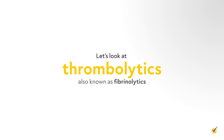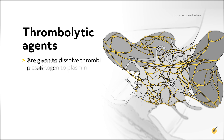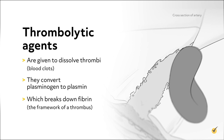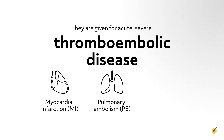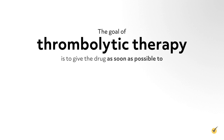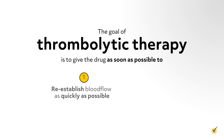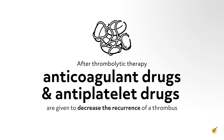Next, let's look at thrombolytics, also known as fibrinolytics. Thrombolytic agents are given to dissolve thrombi, or blood clots. They convert plasminogen to plasmin, which breaks down fibrin, the framework of a thrombus. They are given for acute severe thromboembolic disease, such as myocardial infarction, pulmonary embolism, and iliofemoral thrombosis. The goal of thrombolytic therapy is to give the drug as soon as possible to reestablish blood flow as quickly as possible and prevent or limit tissue damage. After thrombolytic therapy, anticoagulant and antiplatelet drugs are given to decrease the recurrence of a thrombus.